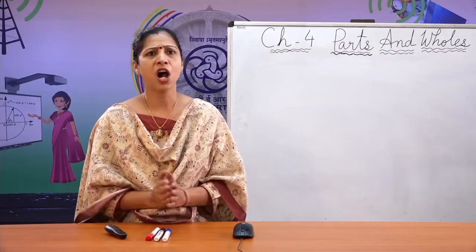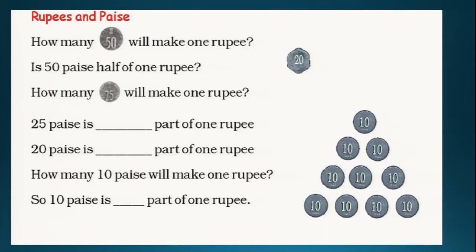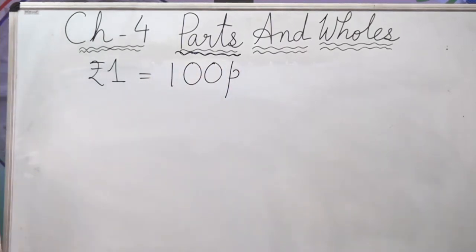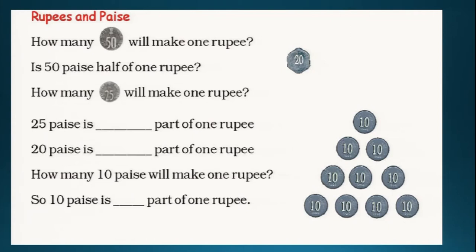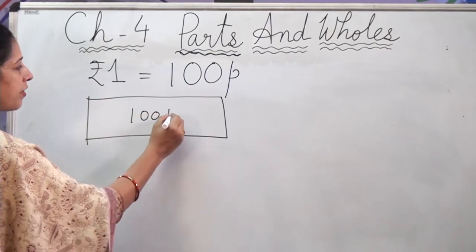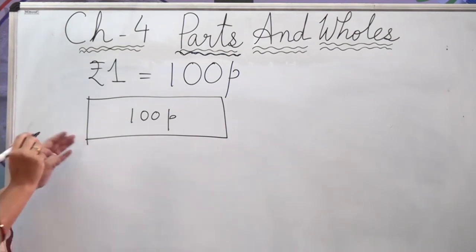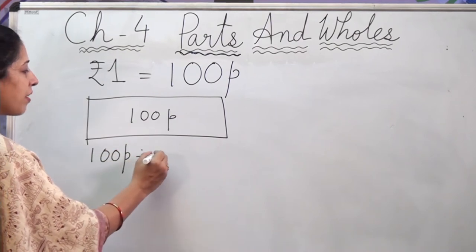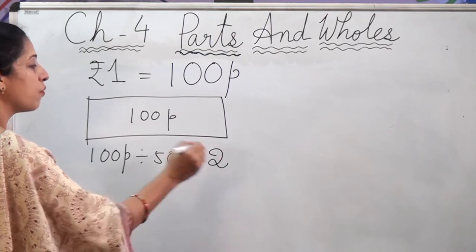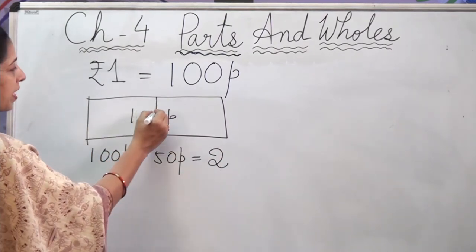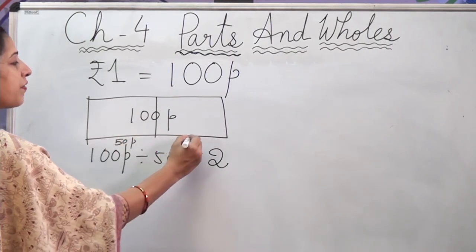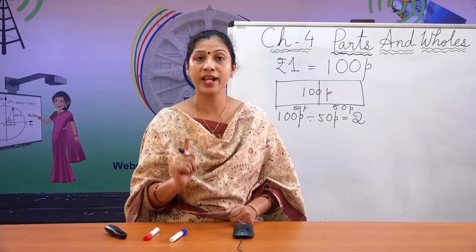So the question is: how many 50 paise will make 1 rupee? We know that 1 rupee equals 100 paise. So we have to find out how many 50 paise are there in 100 paise. 100 paise divided by 50 paise equals 2. That means we can have 2 fifty-paise coins — this is 50 paise and this is 50 paise — and when we combine them together, we get 1 rupee.